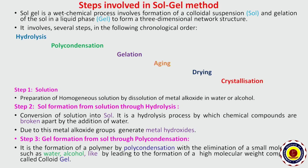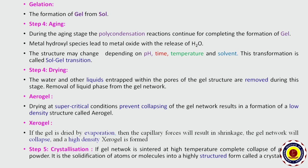Step 3: formation of the gel from sol through polycondensation. A colloidal gel is formed from the sol when small molecules like water and alcohol are removed through polycondensation. Gelation is the formation of gel from sol. Aging is a process through which the polycondensation reaction prolongs with time until the gel network is completely formed, and metal hydroxides lead to metal oxides with the release of water. This transformation is called sol-gel transition.